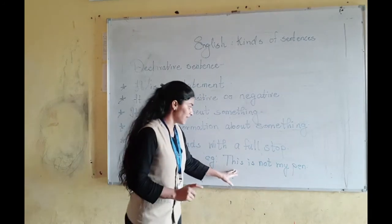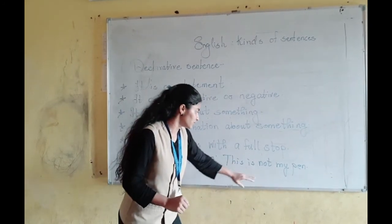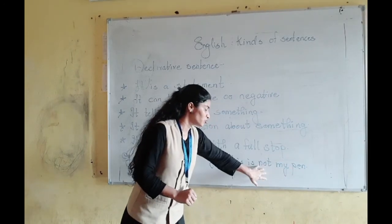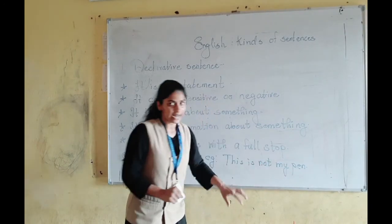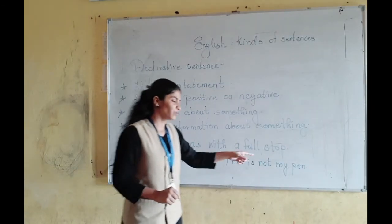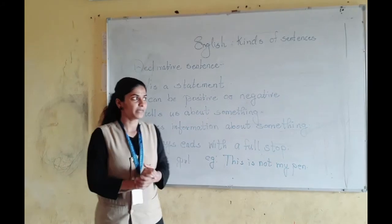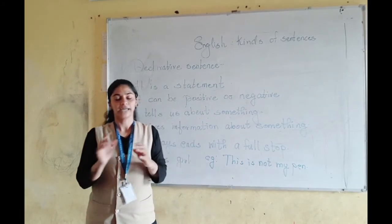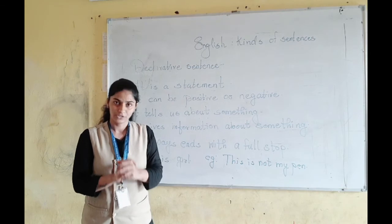Now let's look at this sentence: 'This is not my pen.' The word 'not' shows us that it is a negative sentence. At the end, you can see there is a full stop. You have to keep in mind that in a declarative sentence, at the end, you should put a full stop.